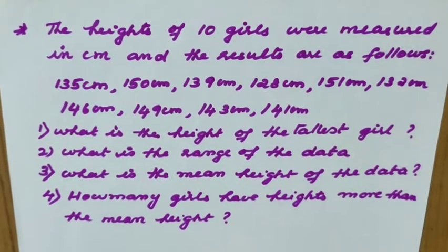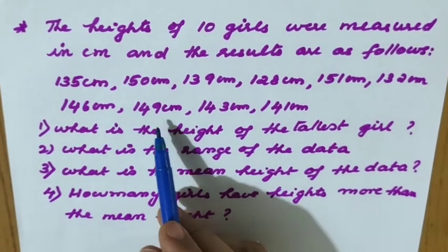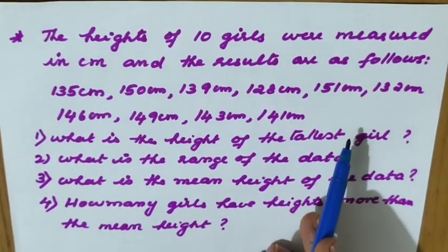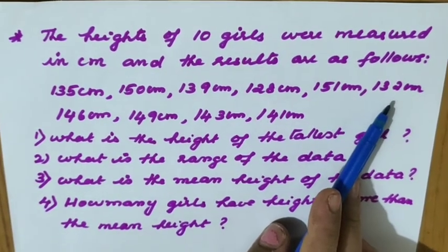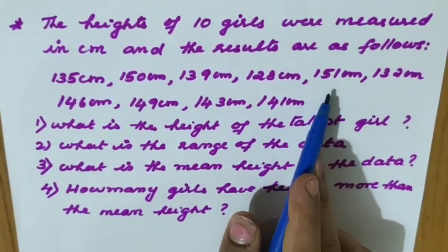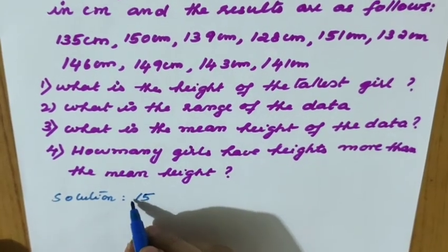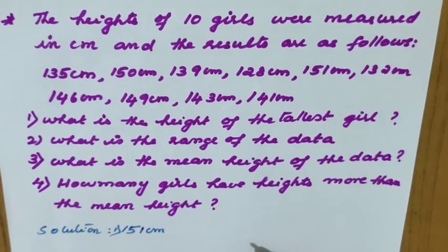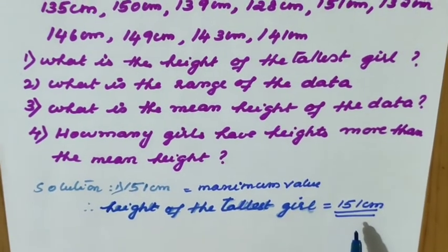The heights of 10 girls were measured in centimeters: 135, 150, 139, 128, 151, 132, 146, 149, 143, 141. What is the height of the tallest girl? Among all the observations, the highest value is 151. Therefore, the height of the tallest girl equals 151 cm, which is the maximum value.